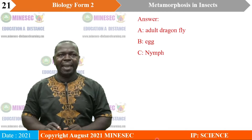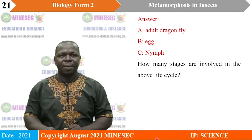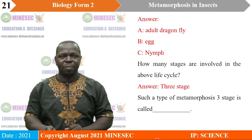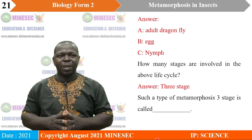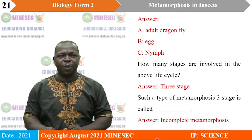How many stages are involved in the above life cycle? Obviously there are three stages which are involved in this life cycle. Such a type of metamorphosis which involves three stages is called incomplete metamorphosis. Incomplete metamorphosis involves three stages: the egg stage, the nymph stage, and the adult stage.